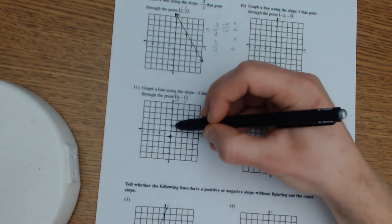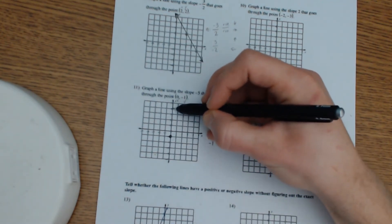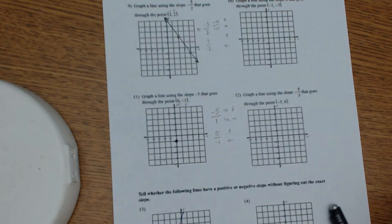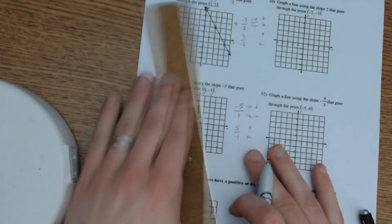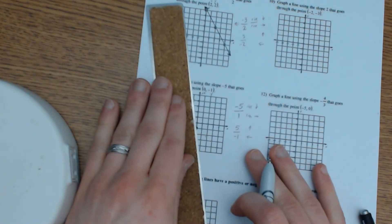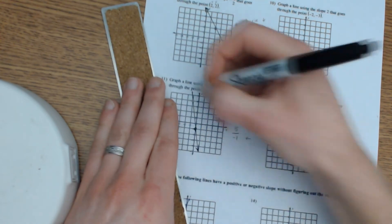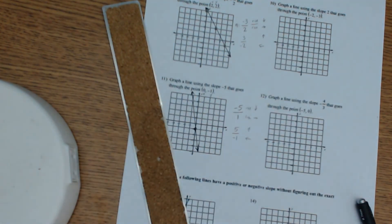So here I go. I'm going to go up 1, 2, 3, 4, 5, and I'm going to go to the left by 1. There we go. And now we can go ahead and connect this to make our line that has a slope of negative 5 and going through the point (0, -1).